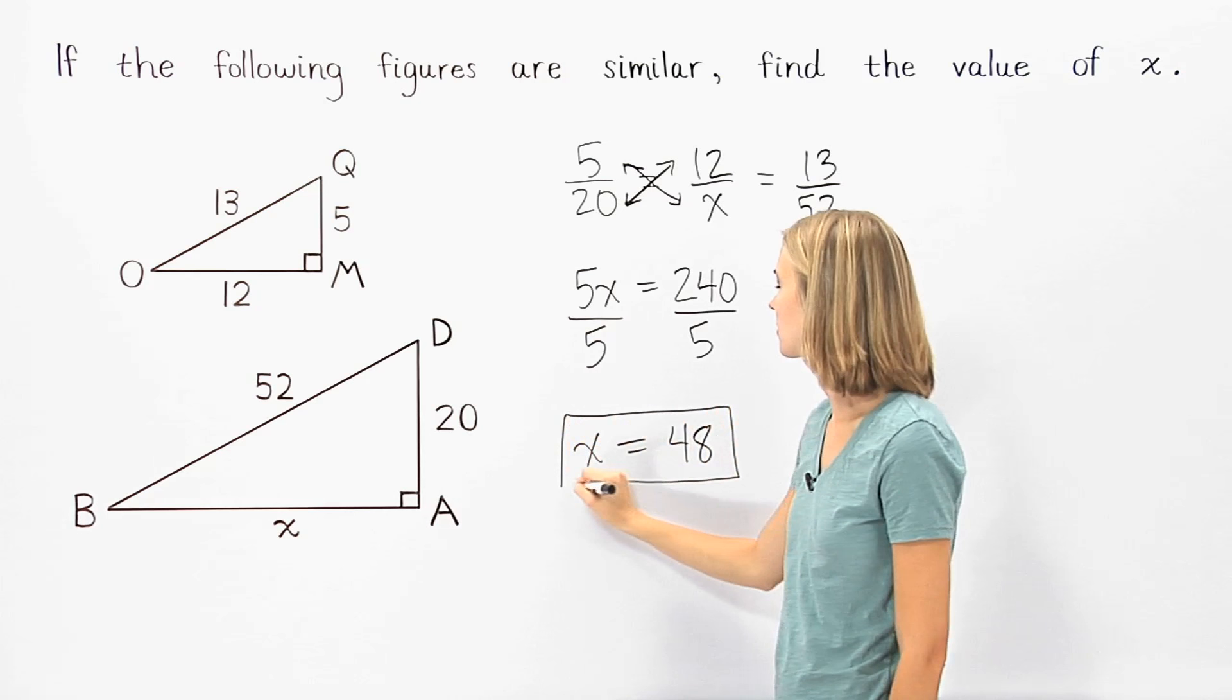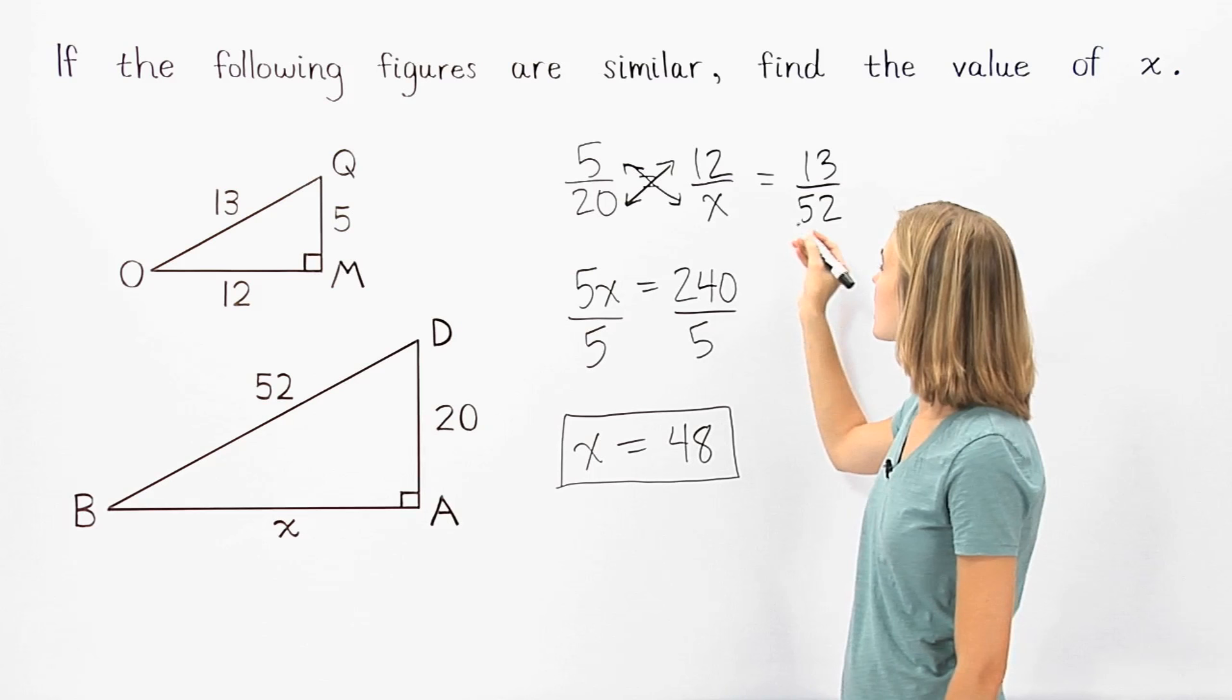It's important to understand that if we used the proportion 12 over x equals 13 over 52, we would get the same answer, x equals 48.